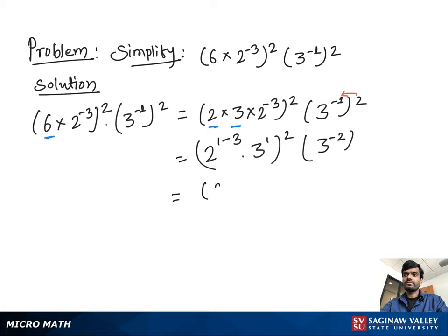Now we get 2 to the negative 2 times 3 to the positive 1 all to the square times 3 to the negative 2. Now we multiply exponents with the power so we get 2 to the negative 4 times 3 squared times 3 to the negative 2.